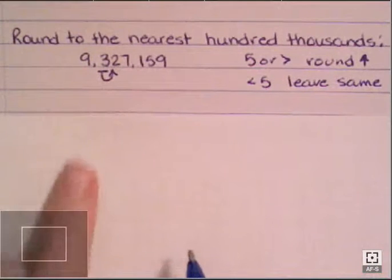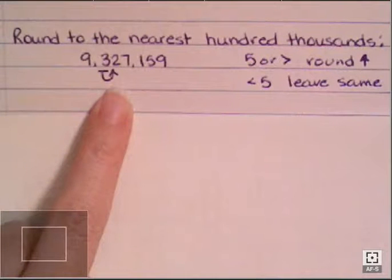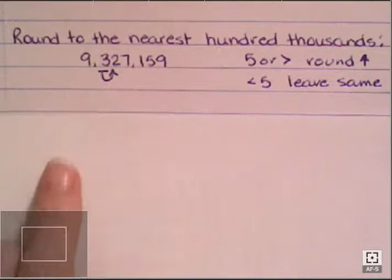So when I do that, I look here, it's a three. The number to the right is a two. The two is less than five, so I'm going to leave the three the same.